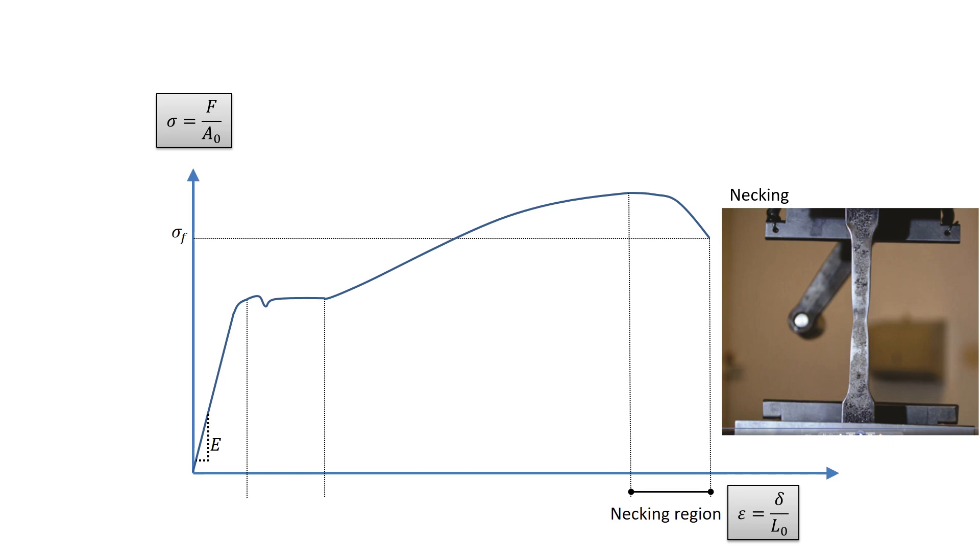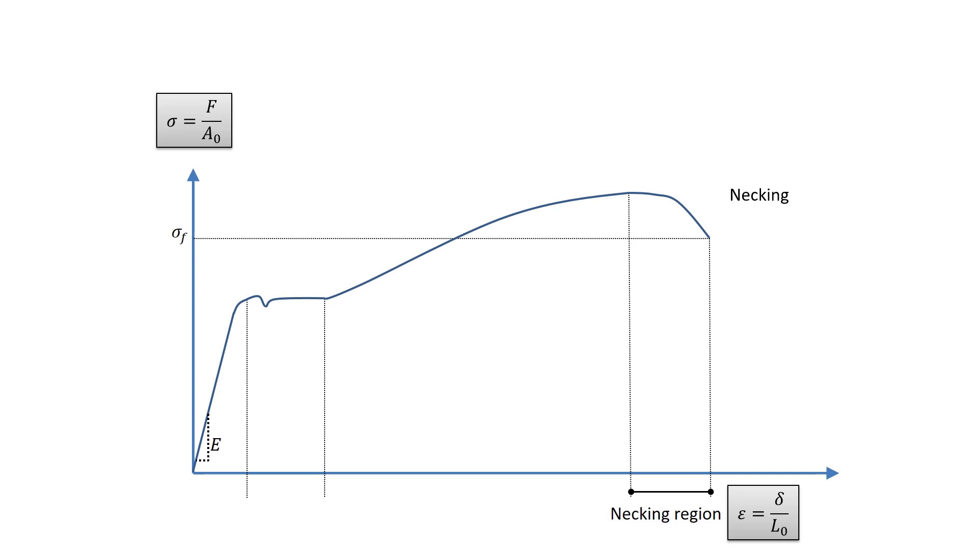As a result, a constriction, or neck, tends to form in this region. Here the stress-strain diagram curves downward until the specimen breaks at fracture stress. This final region is called necking region. The ductility of the material is defined as the fracture strain expressed as a percent.